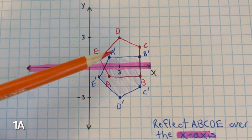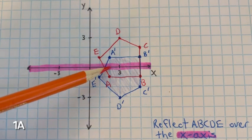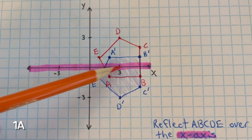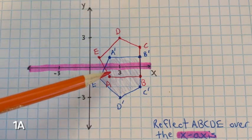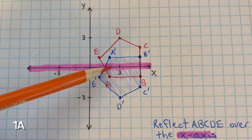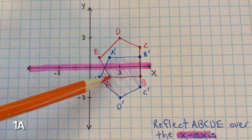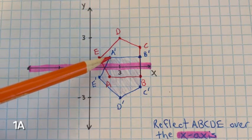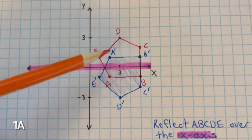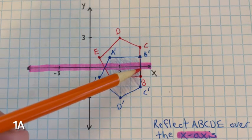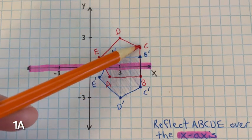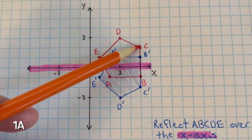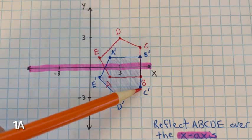Each vertex is going to be equidistant from the line of reflection. A is one unit down, or negative 1, from the x-axis, so a prime is going to be one unit above. B is one unit below, so b prime is one unit above. C is above the x-axis two units, so c prime is two units below.